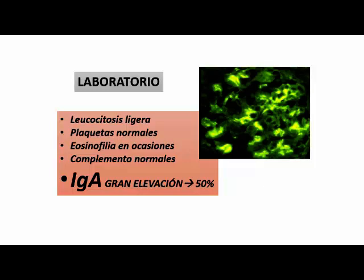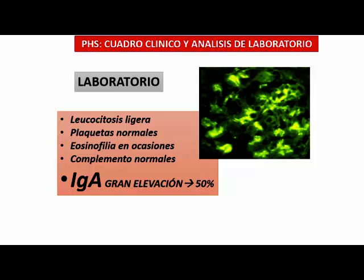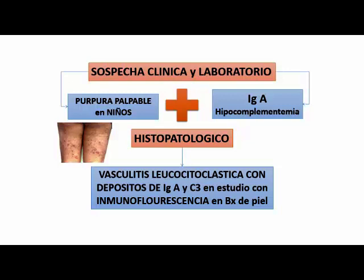IgA de gran elevación. De la sospecha clínica: púrpura palpable en niños asociada a IgA y también es hipocomplementémica. La lesión histopatológica es una vasculitis leucocitoclástica con depósitos de IgA y C3.